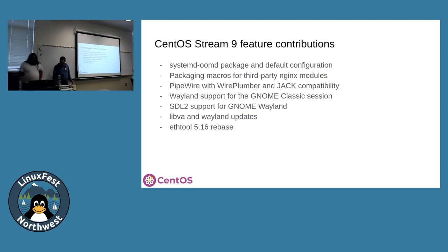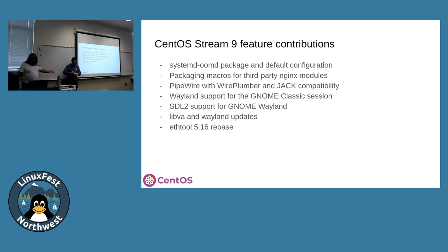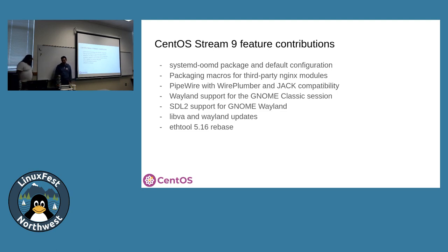Some of the stuff we've done to make CentOS Stream 9 better — some of which happened before Stream 9 was officially released. Davida did the systemd-oomd work, and Neil made a way to package Nginx modules, which was a lot of work. You can now have custom Nginx modules without hurting yourself figuring out how to deliver them, because the way you build Nginx modules is painful. We also brought in PipeWire with WirePlumber and JACK for pro audio, Wayland for all the things, some other random tools, an update for iStool needed for hardware enablement, and a fair bit of work on the kernel live patching infrastructure.